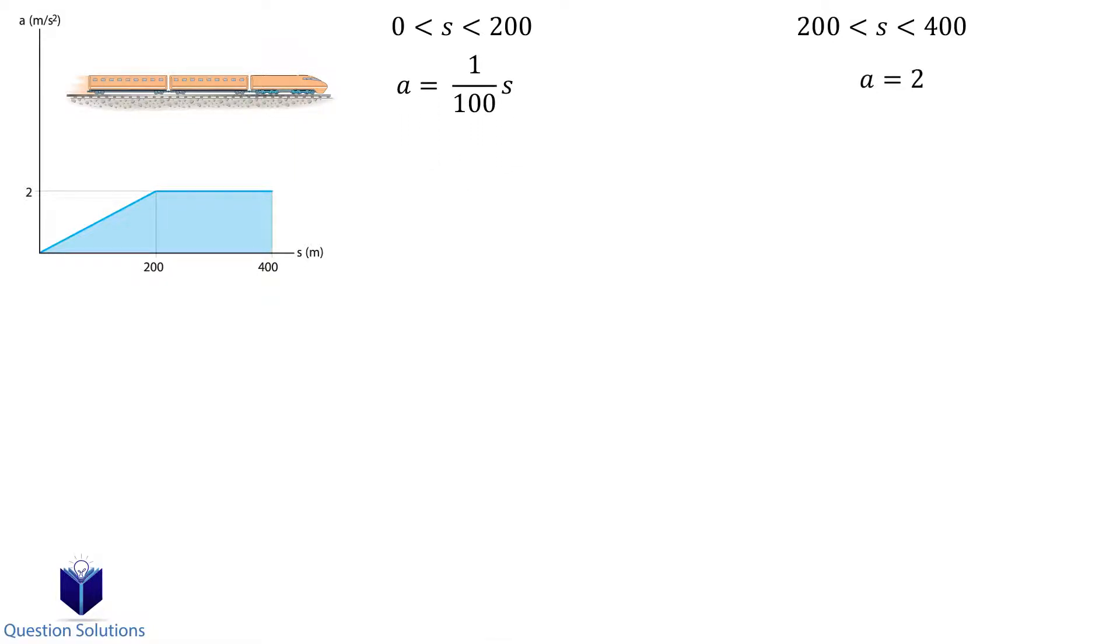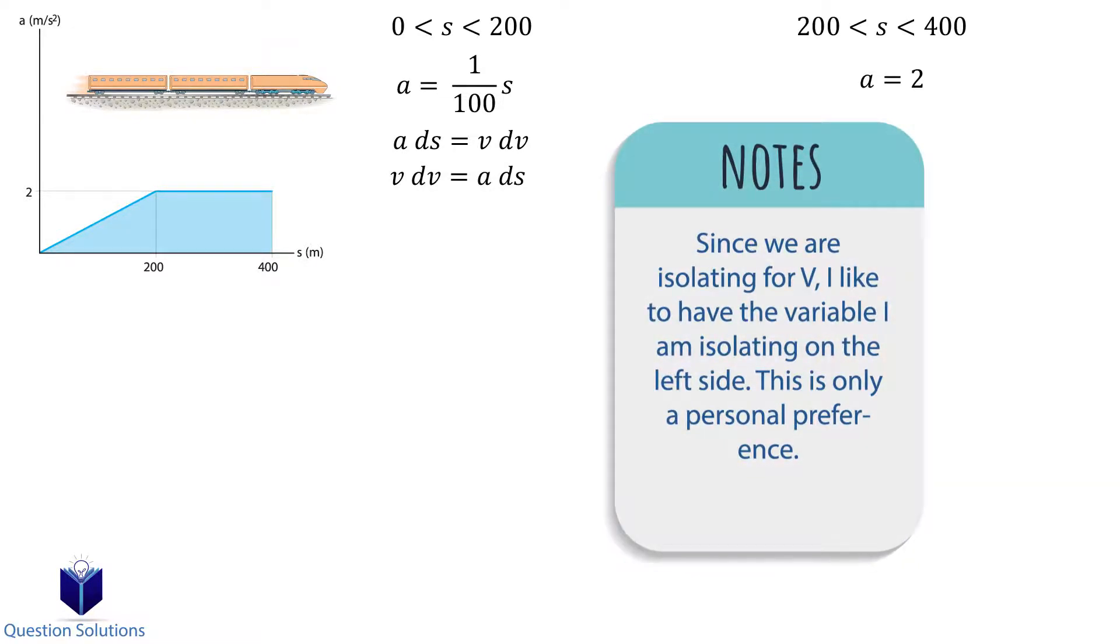Now we need a relationship between velocity, acceleration, and position. We know of one, which is ads is equal to vdv. Let's write it the opposite way, vdv is equal to ads.